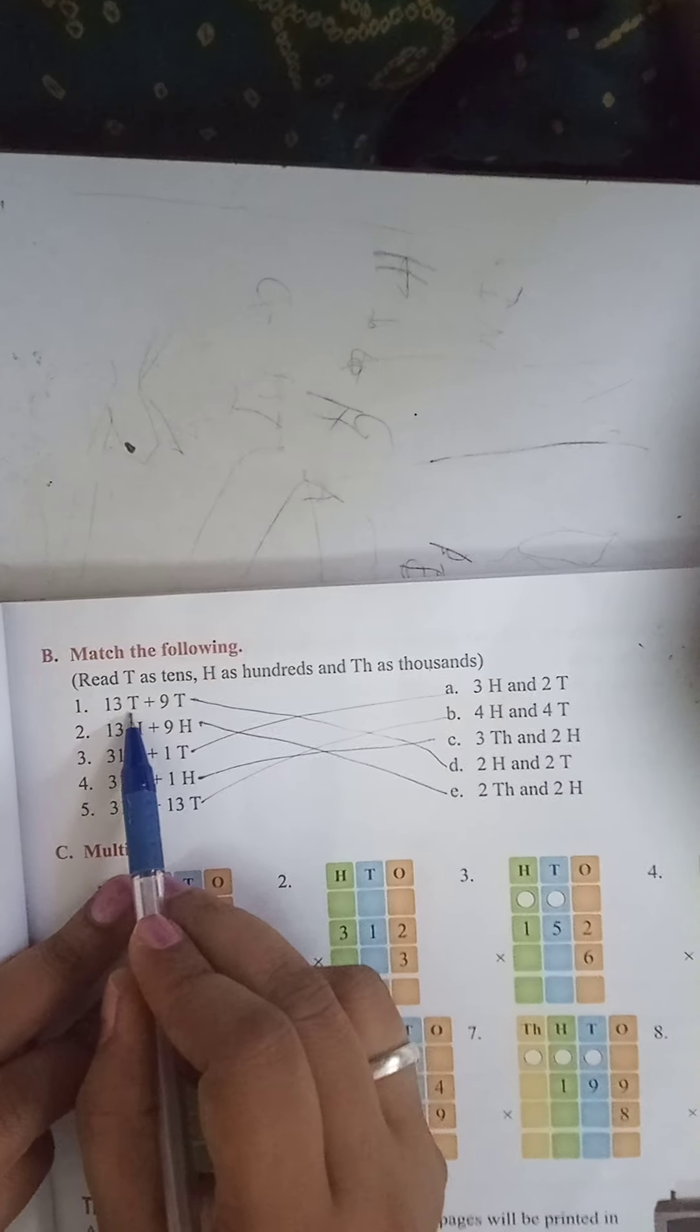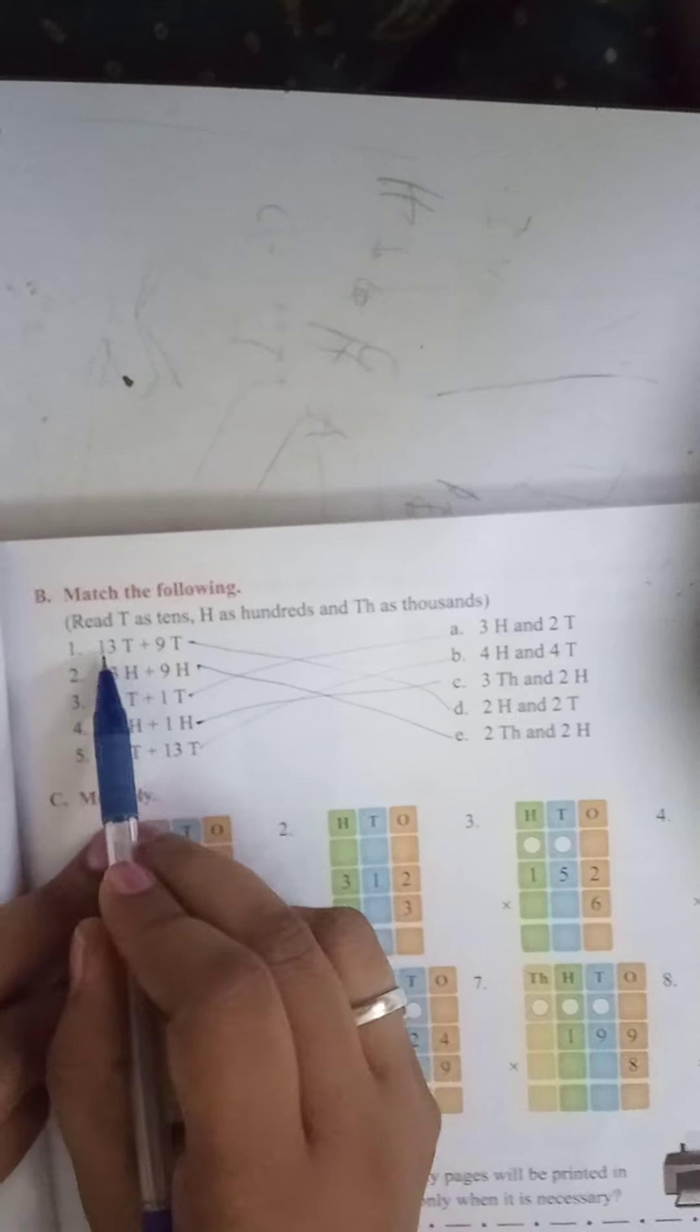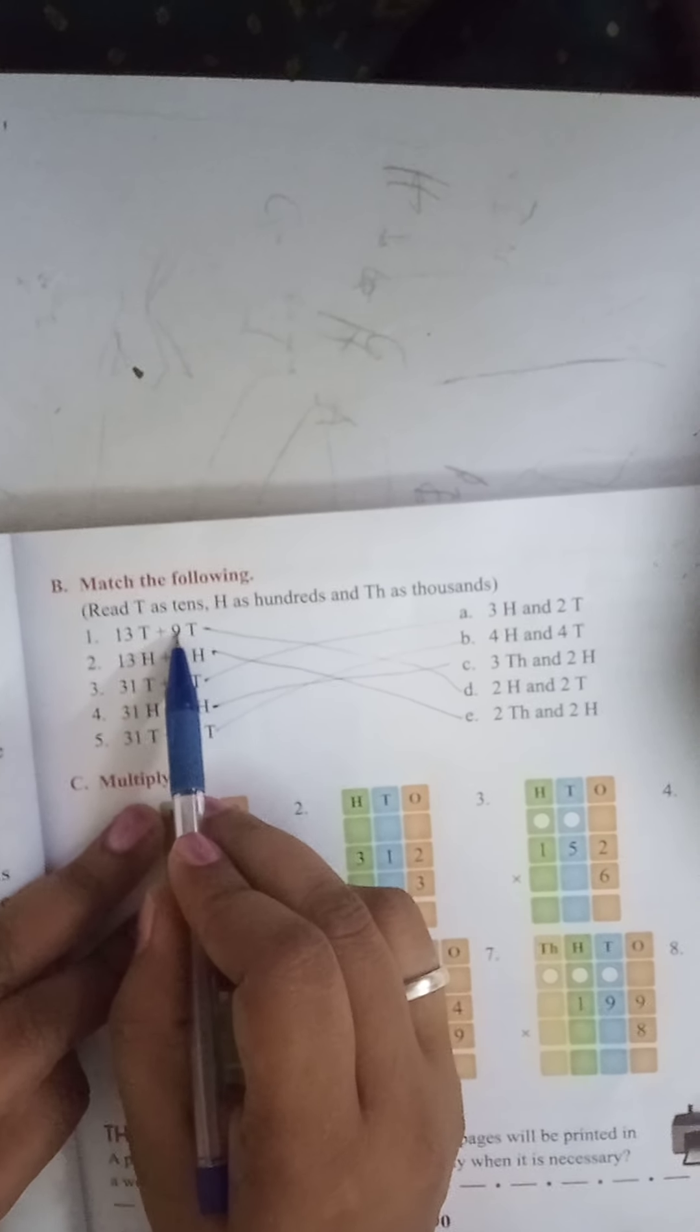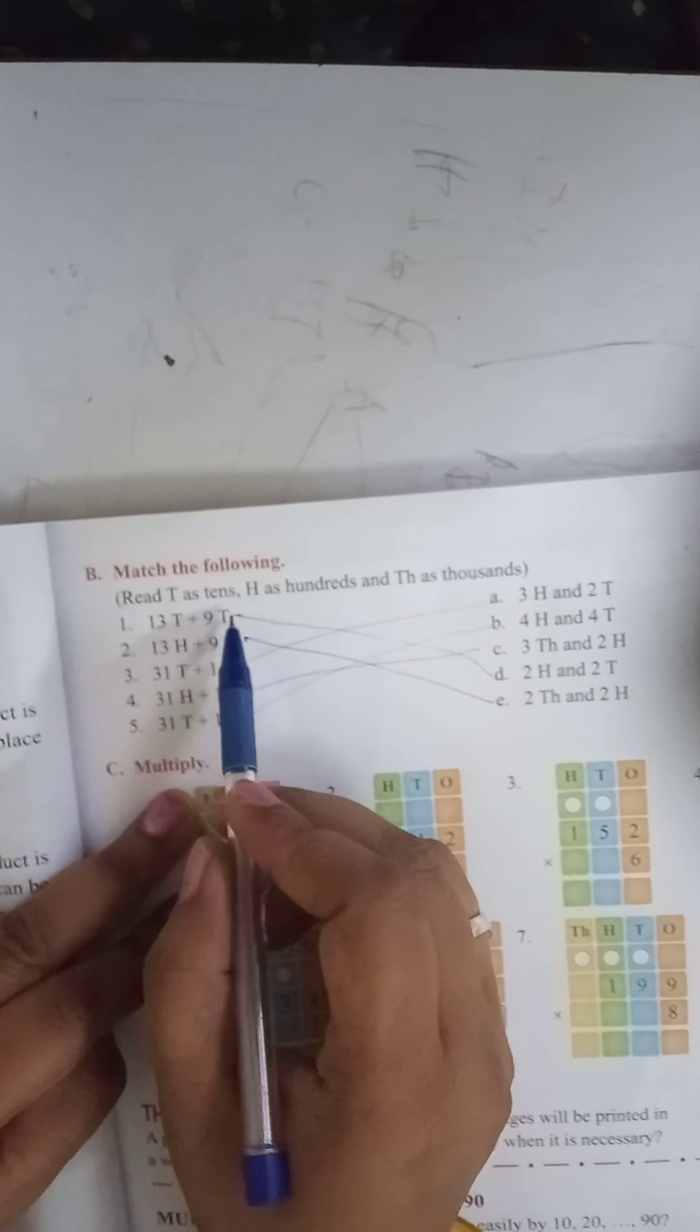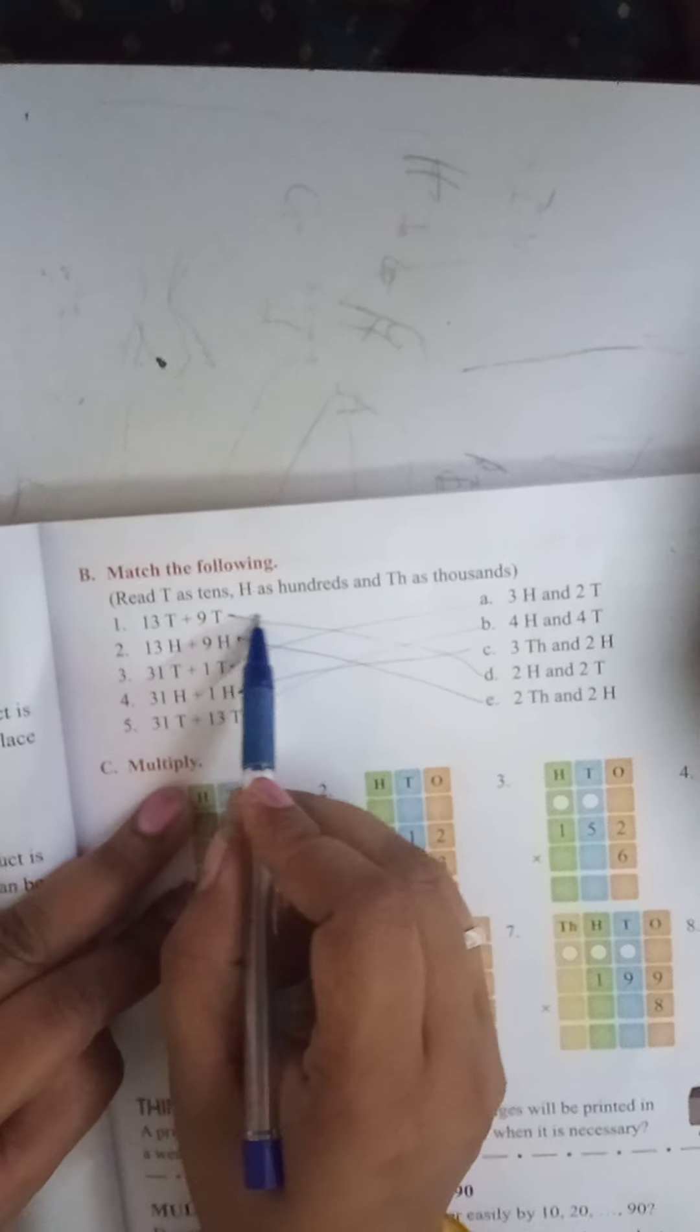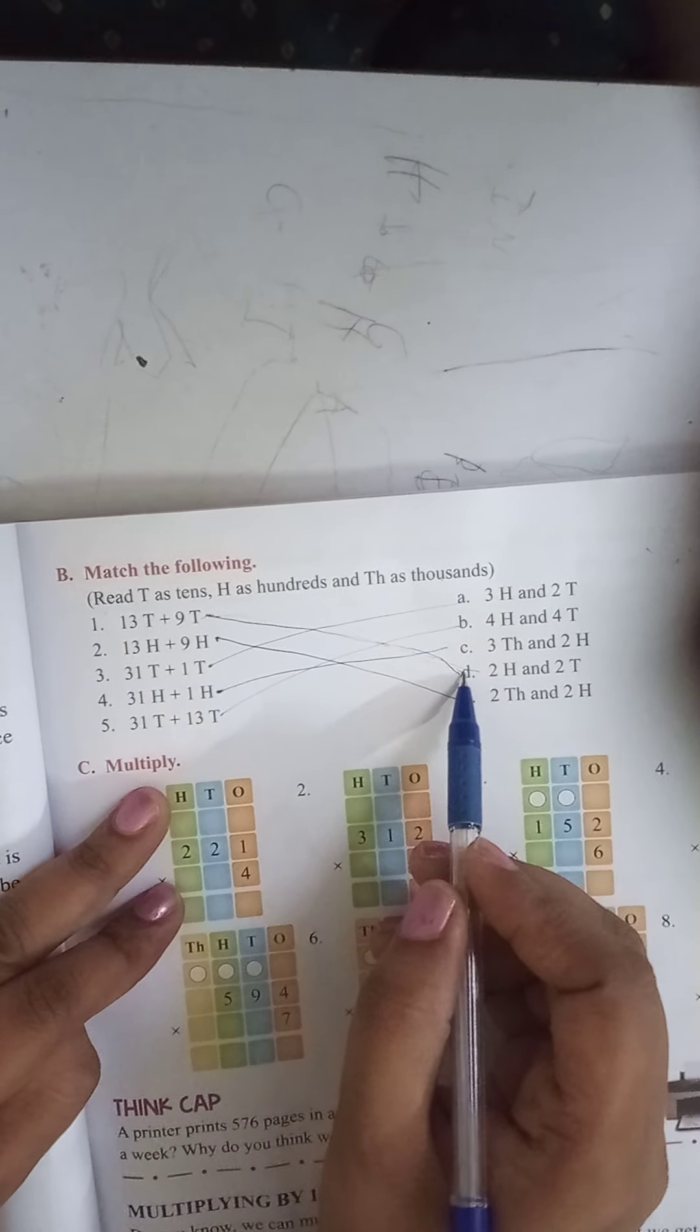13 tens plus 9 tens. First you have to make addition. 13 plus 9 is equal to 22. So 22 hundred... two tens. The answer is D option.